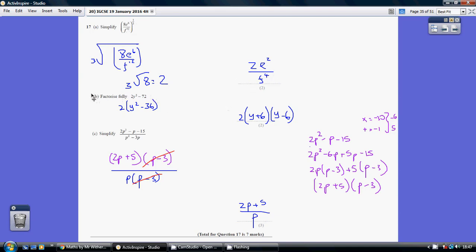Now part B, to factorize this fully: step one, we can take the 2 out, so we've got 2 lots of y squared minus 36. You've then spotted that this is a difference between two squares, so this can be y plus 6, y minus 6.